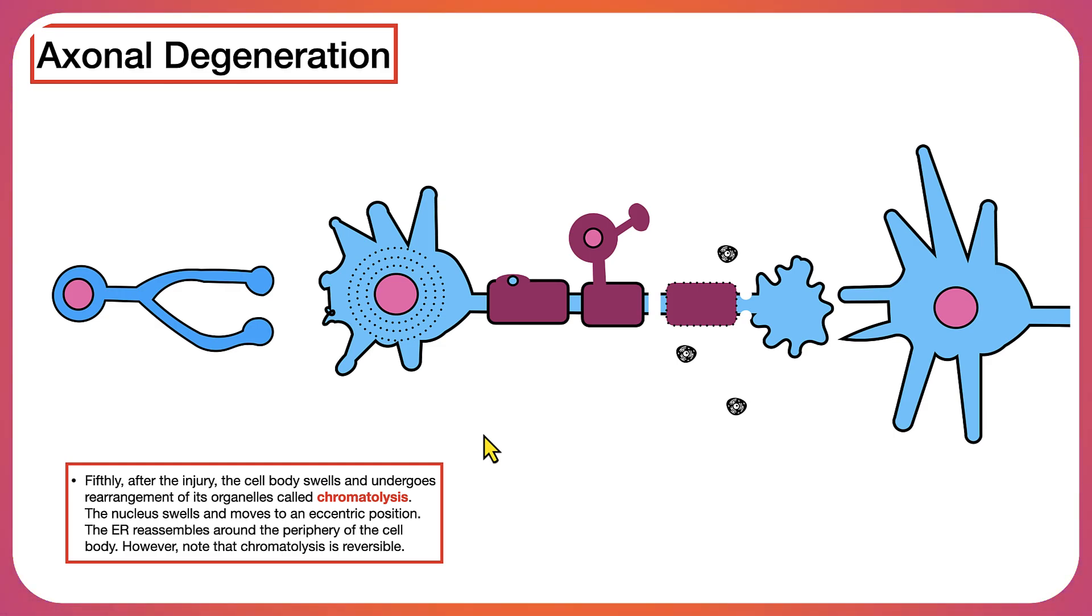However, note that chromatolysis is a reversible process, and it's reversible if the neuron survives and also the distal projections can re-establish contact with its appropriate targets.